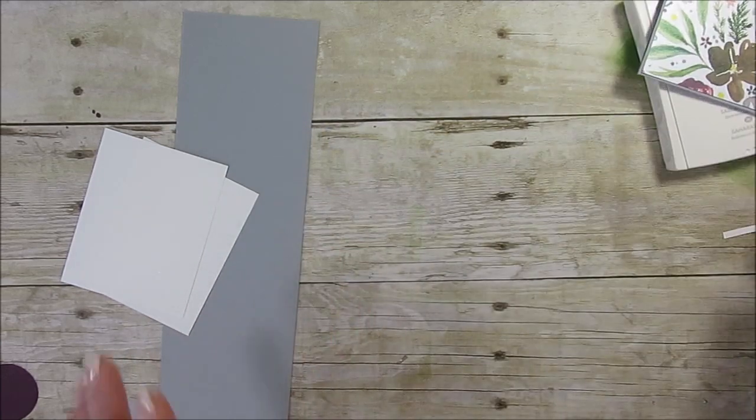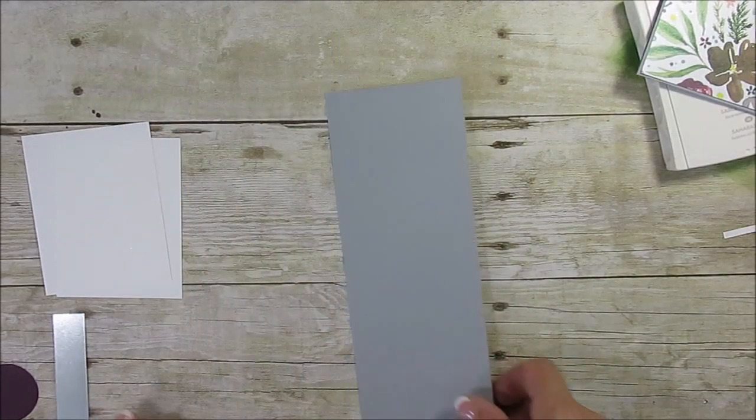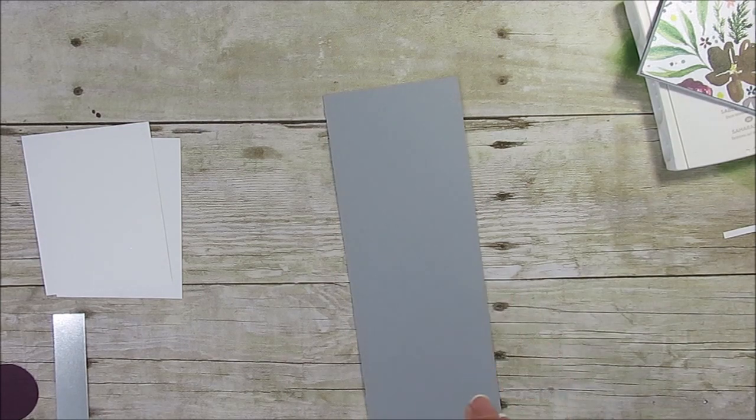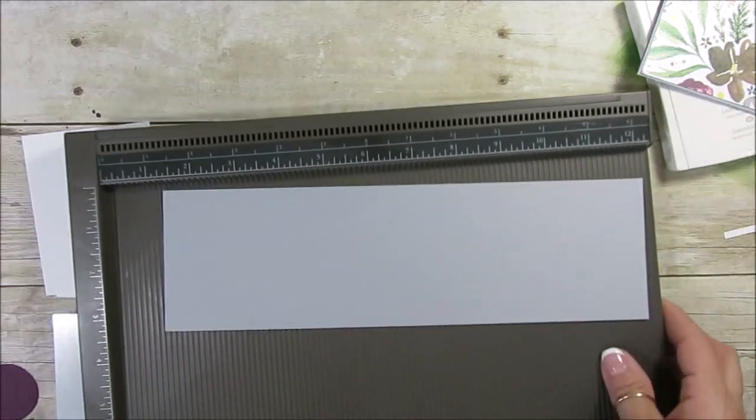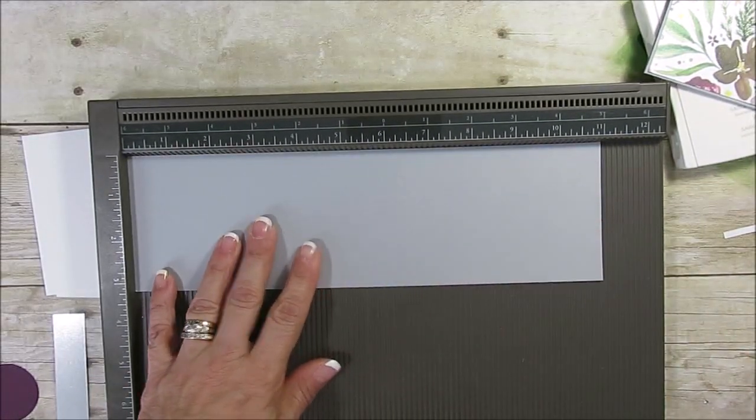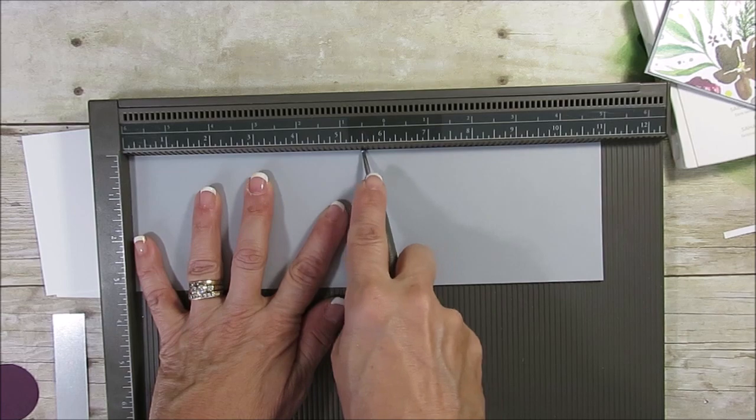So I'm going to untie this one because we're going to do this one. We're going to use a piece of cardstock, this is Smoky Slate, that measures 3 1/4 by 11, and we're going to score at 5 1/2.